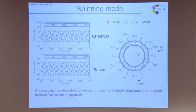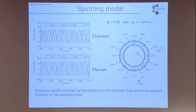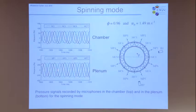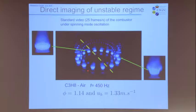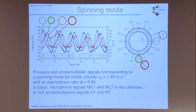In terms of signals for the spinning mode, you have these beautiful signals at the microphones as you would expect, in the chamber and in the plenum. In the plenum you have about 200 pascals; in the chamber, about 60 pascals. This just shows there is a difference between the flames which are away from the nodal line and the flames that are close to the nodal lines — their shape is different.